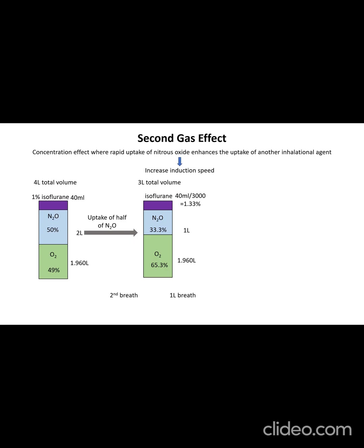Due to the sub-atmospheric pressure created in the alveoli, a further 1 liter of the gas mixture is inhaled during the second breath, which contains 10 milliliters of isoflurane, 490 milliliters of oxygen, and 500 milliliters of nitrous oxide.